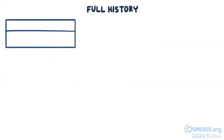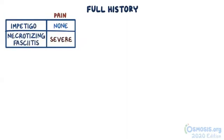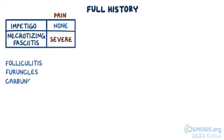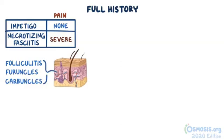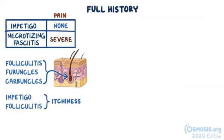The first step is getting a full history. In impetigo there's usually no pain, whereas in necrotizing fasciitis the pain is severe. Most skin infections tend to be localized and around a particular anatomic structure. For example, folliculitis, furuncles, and carbuncles involve the hair follicle. Also, a superficial infection like impetigo or folliculitis causes itchiness.